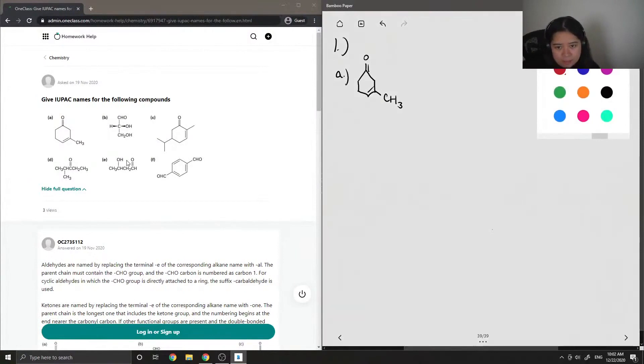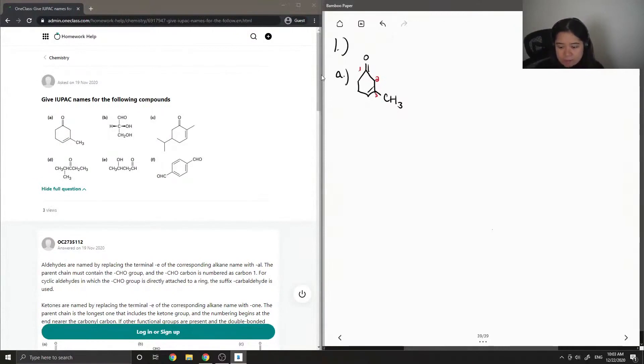When I name compounds like this, I like to first number all of my carbons starting with the most important group, which is the ketone. In this case, I'm going to be numbering clockwise since our double bond and our methyl group is on carbon 3, and we want to make sure we have the least amount of numbers in our final name.